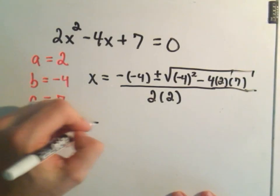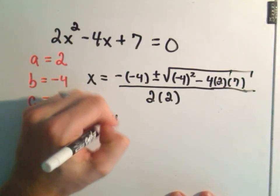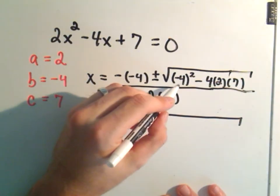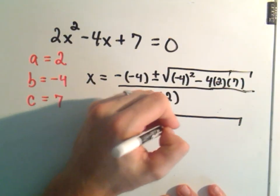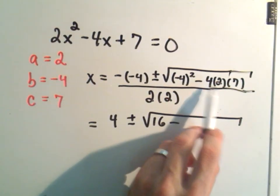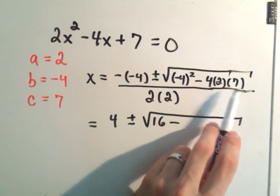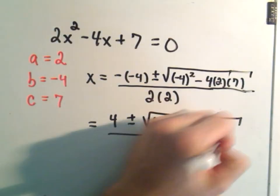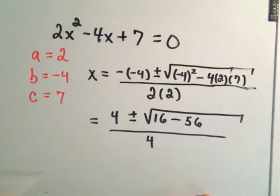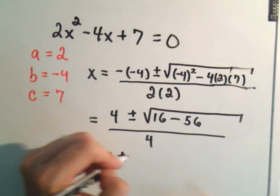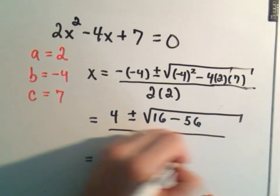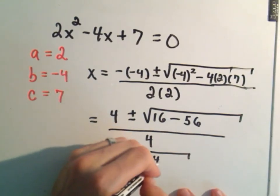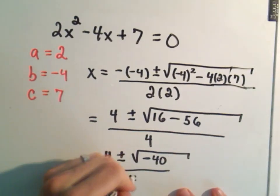Simplifying the numerator, negative times negative gives positive 4. Under the square root, (-4)² is 16, minus—well, -4 times 2 is -8, times 7 is -56, all over 4. We get 4 ± √(16 - 56), which is √(-40), over 4.